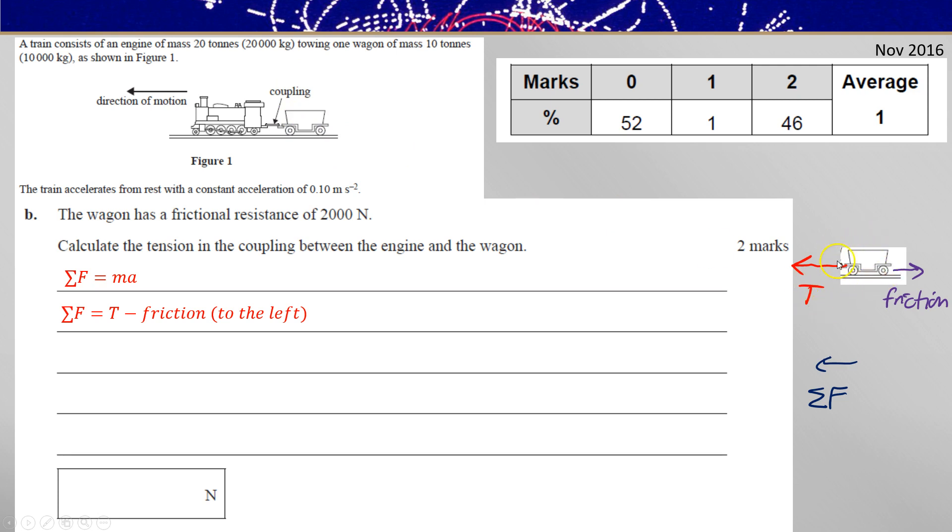Now we know the acceleration and we know the mass of the wagon. So taking just the wagon on its own, we need the mass of the wagon. I've rearranged this to give tension is MA. That's the forces F equals MA plus the friction.